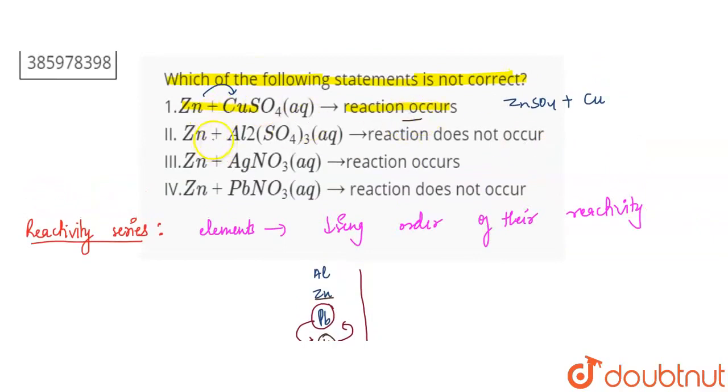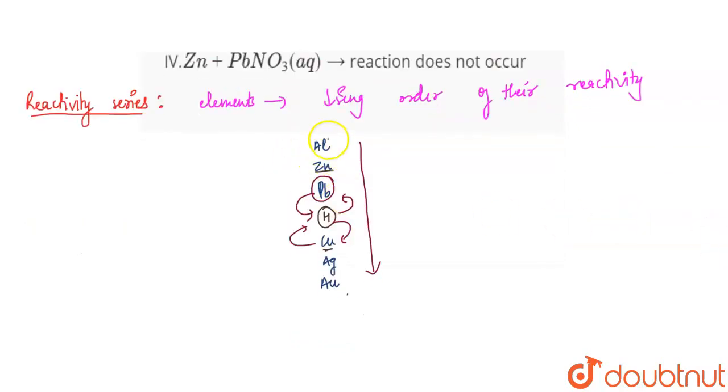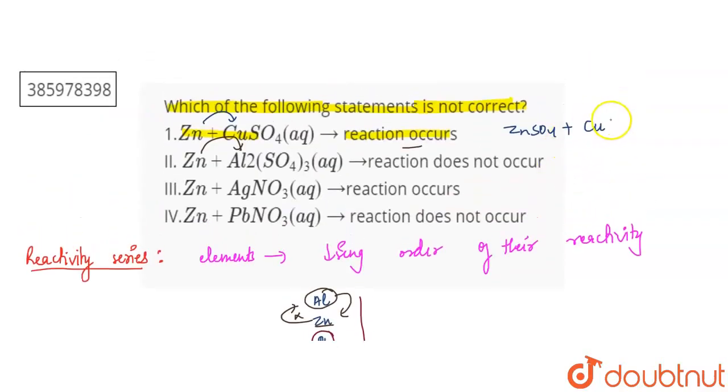Next, we are saying that when we have zinc and Al2(SO4)3, it does not react. This means zinc cannot displace aluminum. Zinc is below aluminum. Aluminum can displace zinc, but zinc cannot. So this is why this statement is correct. First statement is correct, second statement is correct. We need to find the incorrect one.